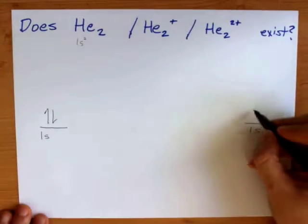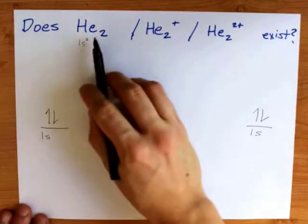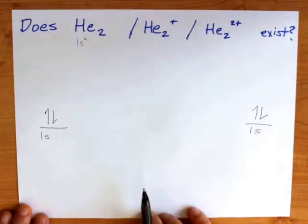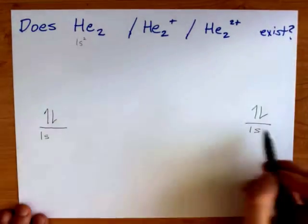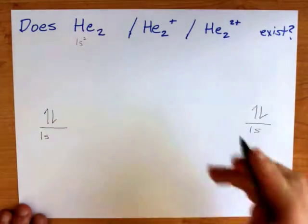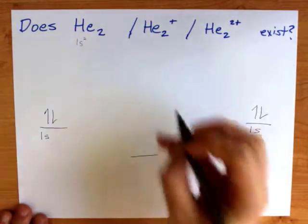There are two electrons in each of those, at least for He₂ there are. Now when those two atomic orbitals overlap, it gives you two molecular orbitals.